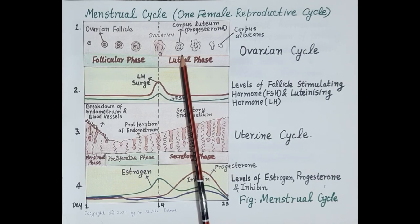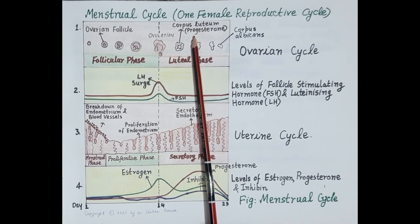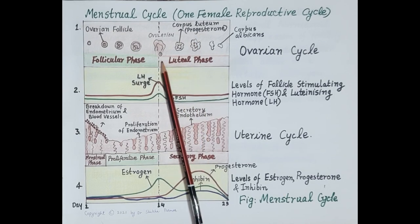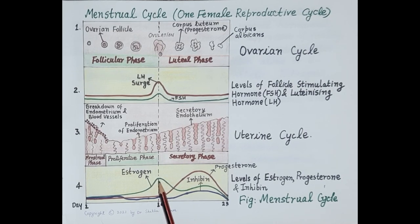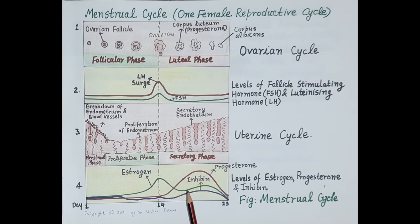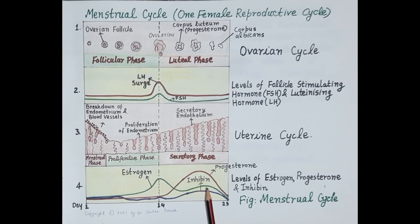The corpus luteum produces large amounts of progesterone and comparatively lesser amounts of estrogen. If the egg is not fertilized, levels of progesterone and estrogen fall, marking the beginning of a new reproductive cycle. Estrogen, shown in green, rises during the follicular phase; the developed follicle produces maximum estrogen. The corpus luteum produces comparatively lesser amounts of estrogen, depicted as a slight bump peaking around day 21, which then falls if the egg is not fertilized.